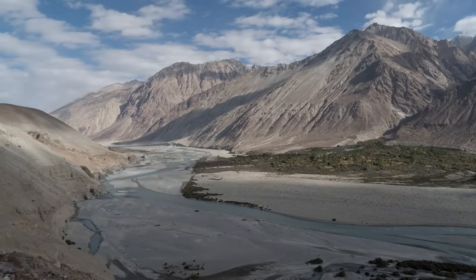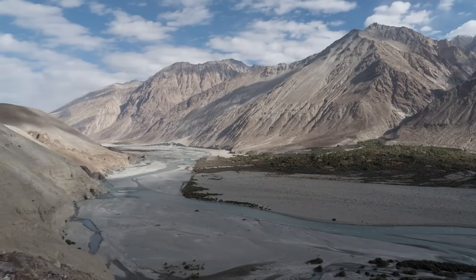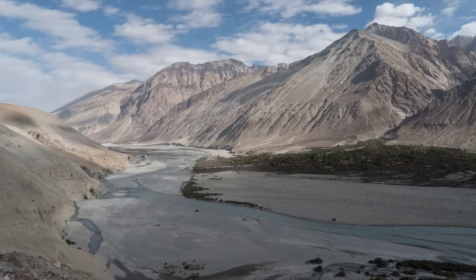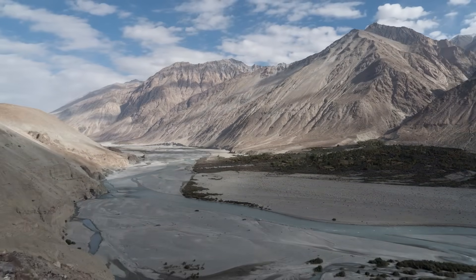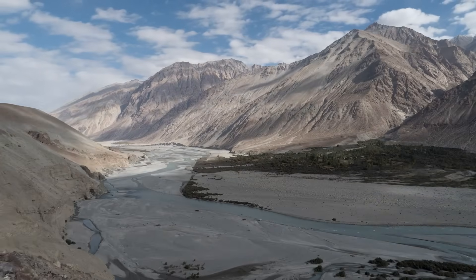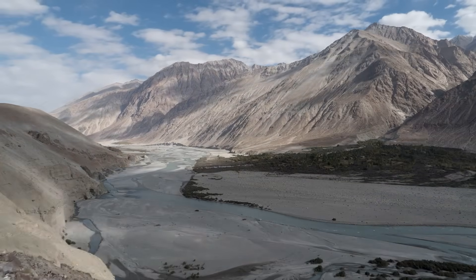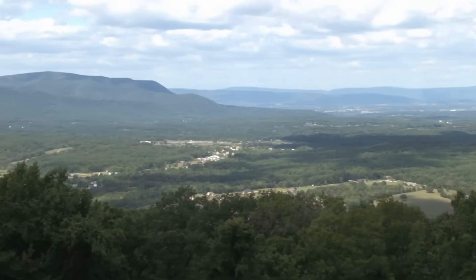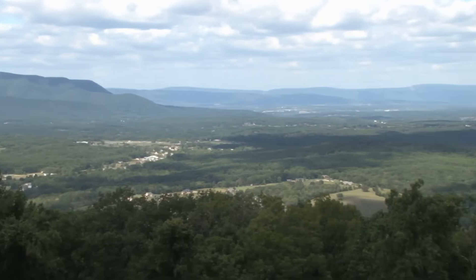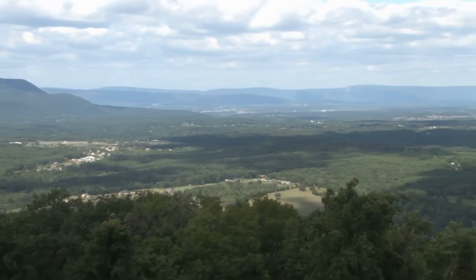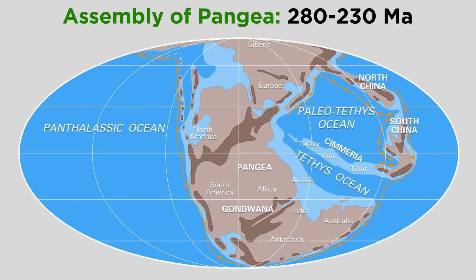These mountains were around the size of the Himalayas when they first formed, and have extensively eroded over the past 300 million years, leaving behind the resistant stumps of a once great mountain range. The Alleganian orogeny concluded with the assembly of the supercontinent Pangea at the end of the Paleozoic.